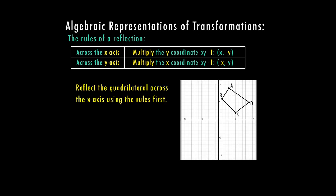Here we have a quadrilateral and we want to reflect it across the x-axis using the rules first. We plot the points: A is at (3, 9), B is at (1, 6), C is at (5, 2), and D is at (9, 5).